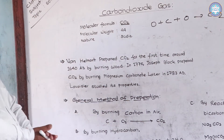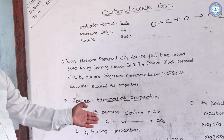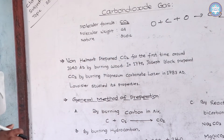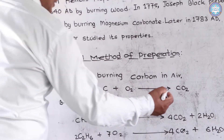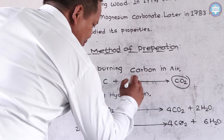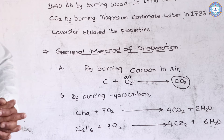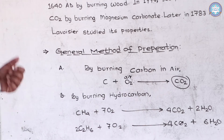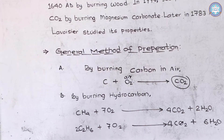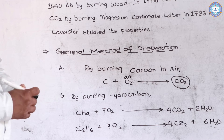There are some general methods of preparation through which we can get carbon dioxide gas. The first process is by burning carbon in air — when carbon is burned in air, we can directly get carbon dioxide gas. Another process of making carbon dioxide gas is by burning hydrocarbons.